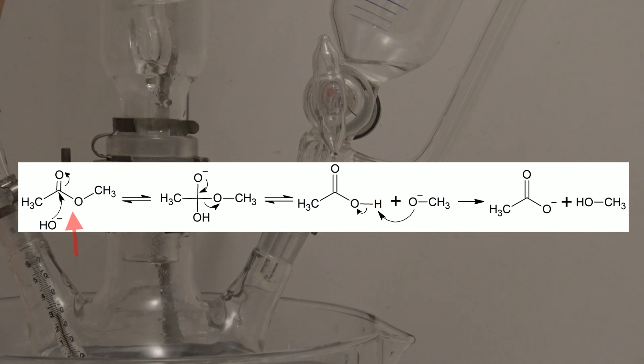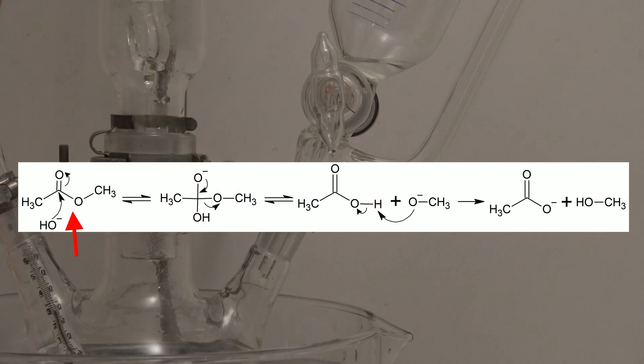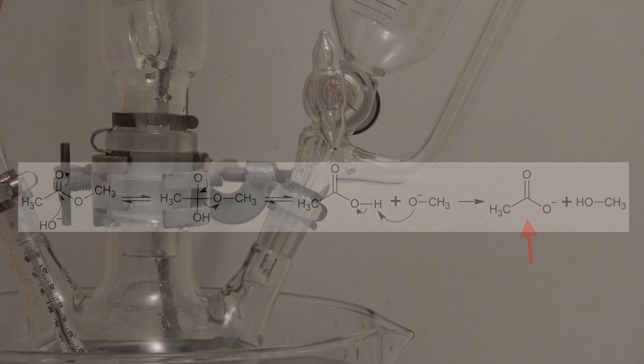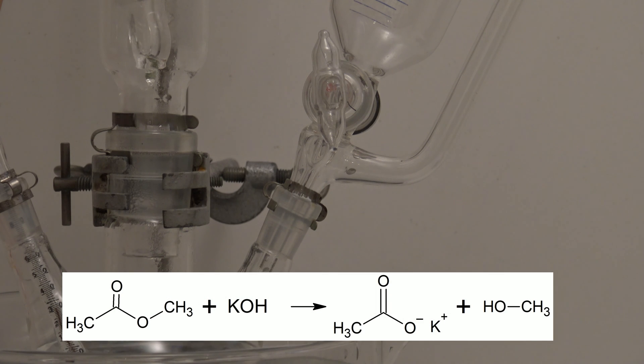In the alkaline hydrolysis, the ester is attacked by a hydroxide ion as a nucleophile. After an intermediate step, the alcoholate is removed, leaving the carbonic acid. This is deprotonated by the alcoholate, and an alcohol and the carboxylate are formed. In summary, the methyl acetate reacts with the potassium hydroxide to form potassium acetate and methanol.